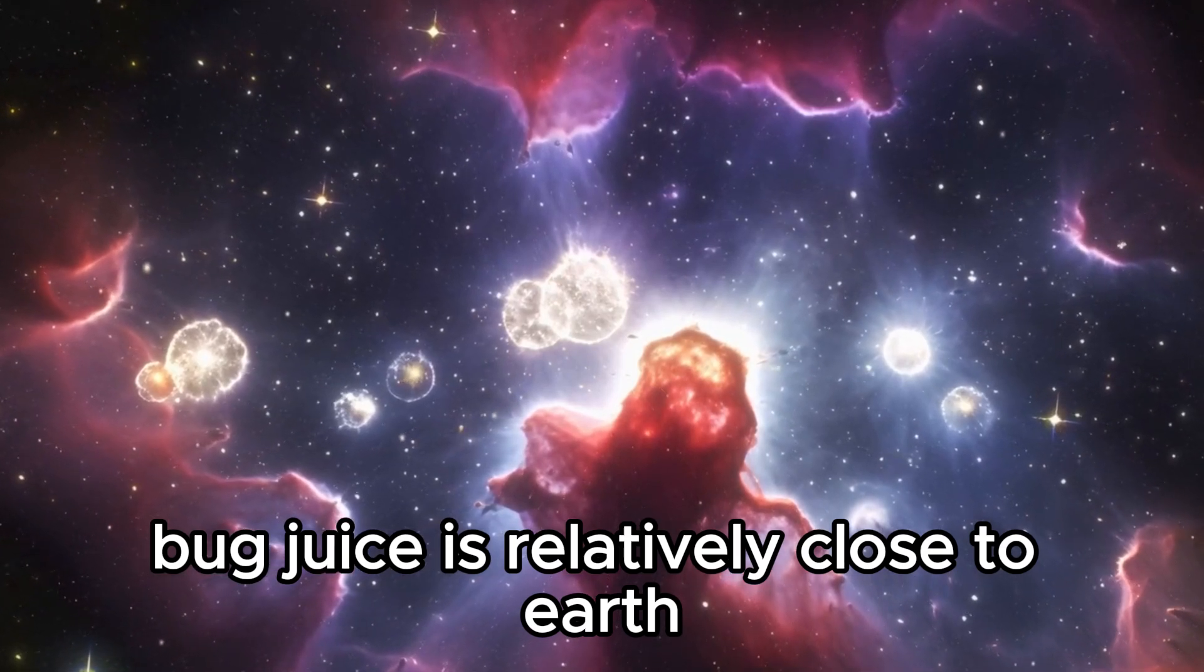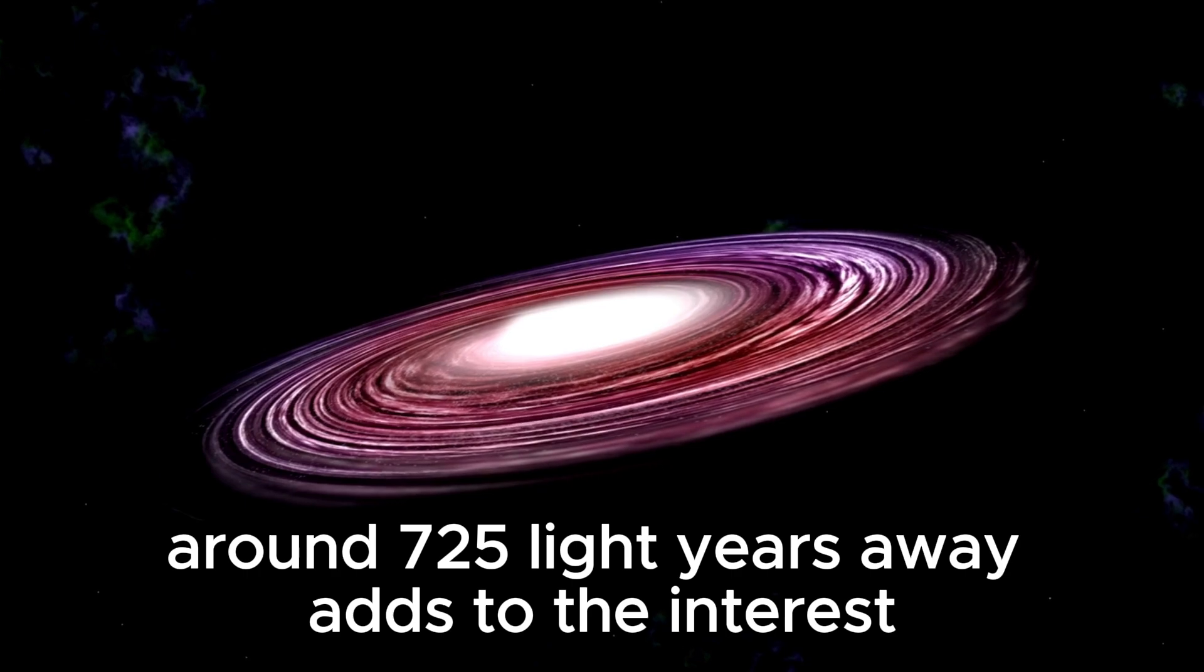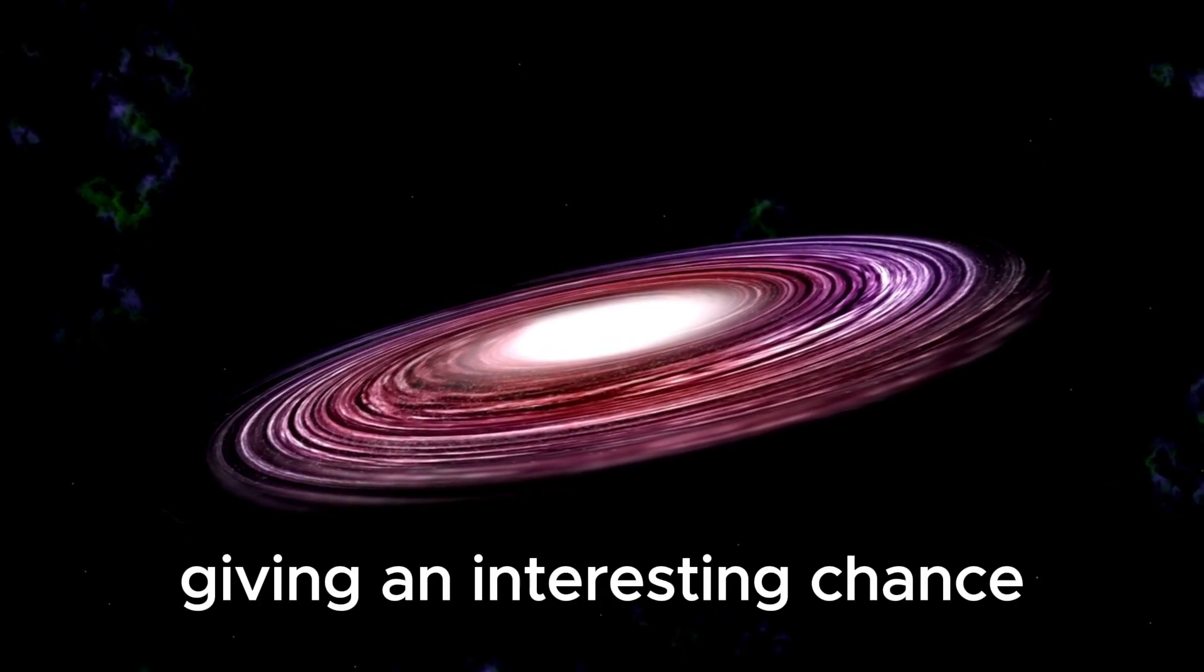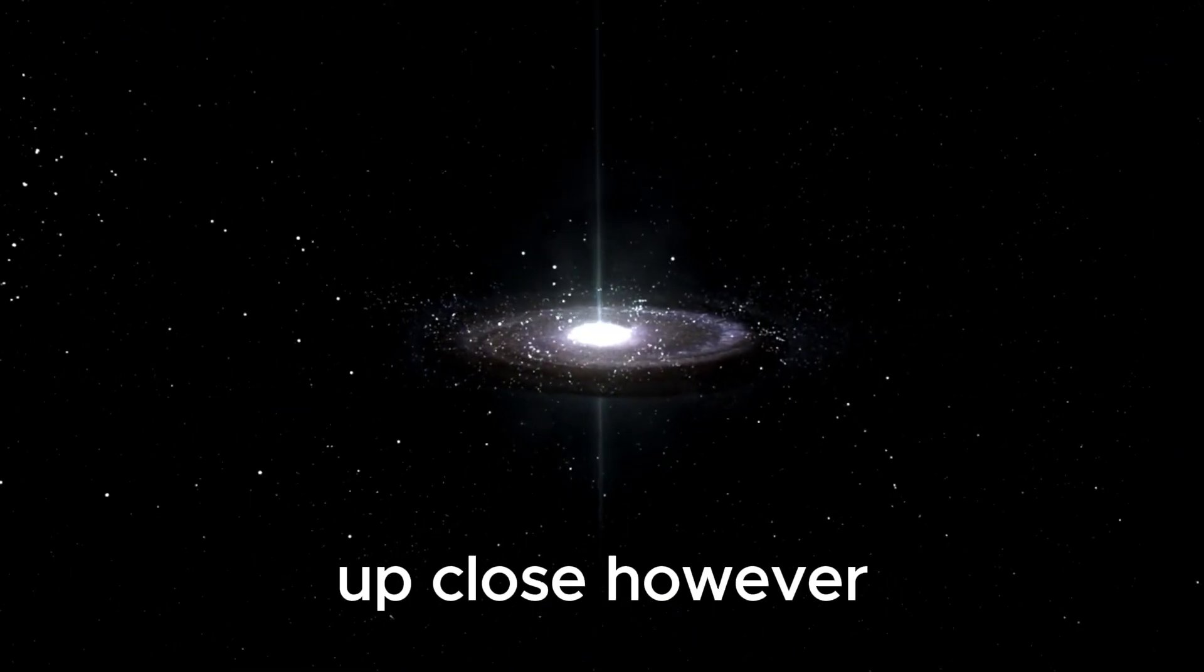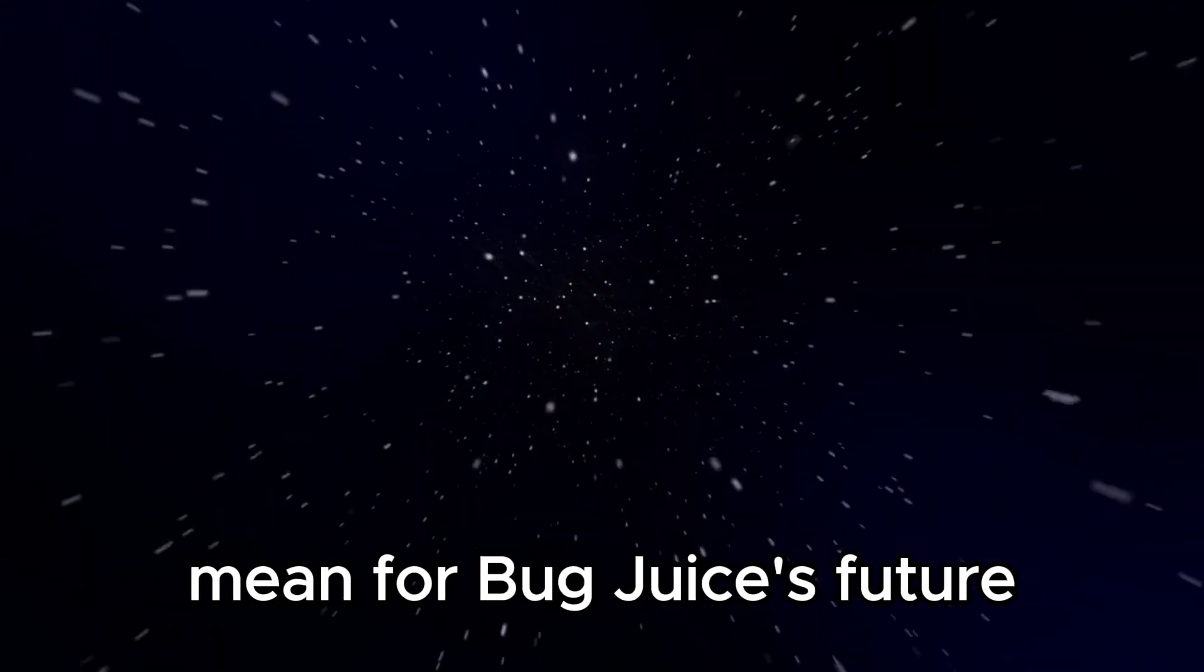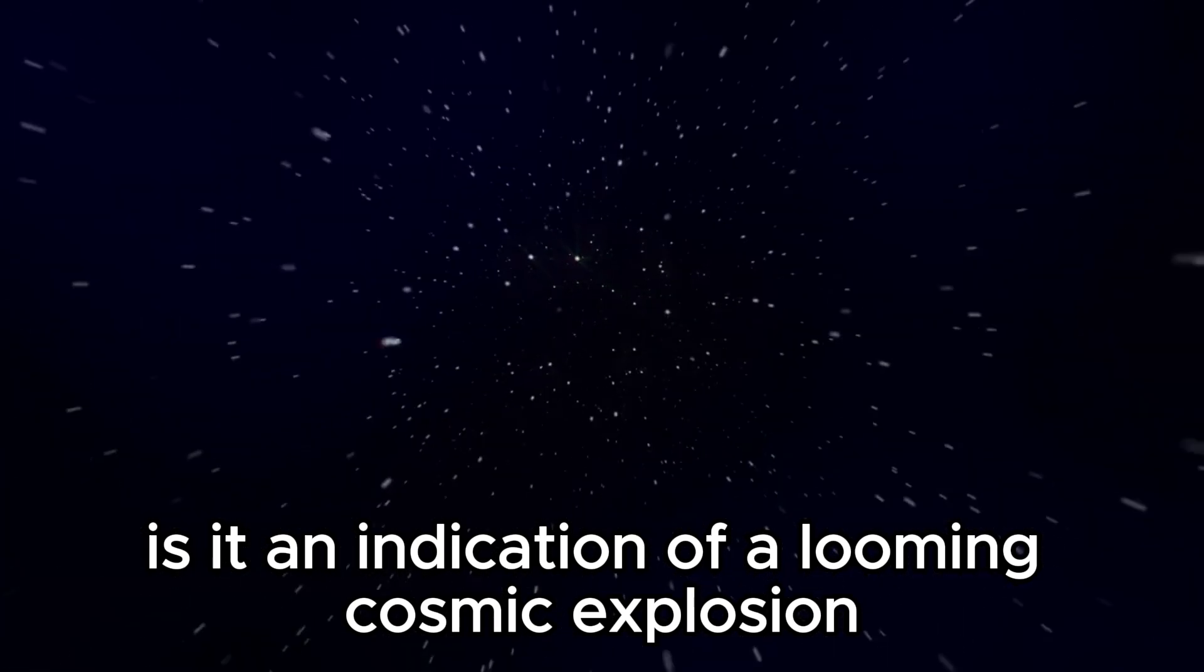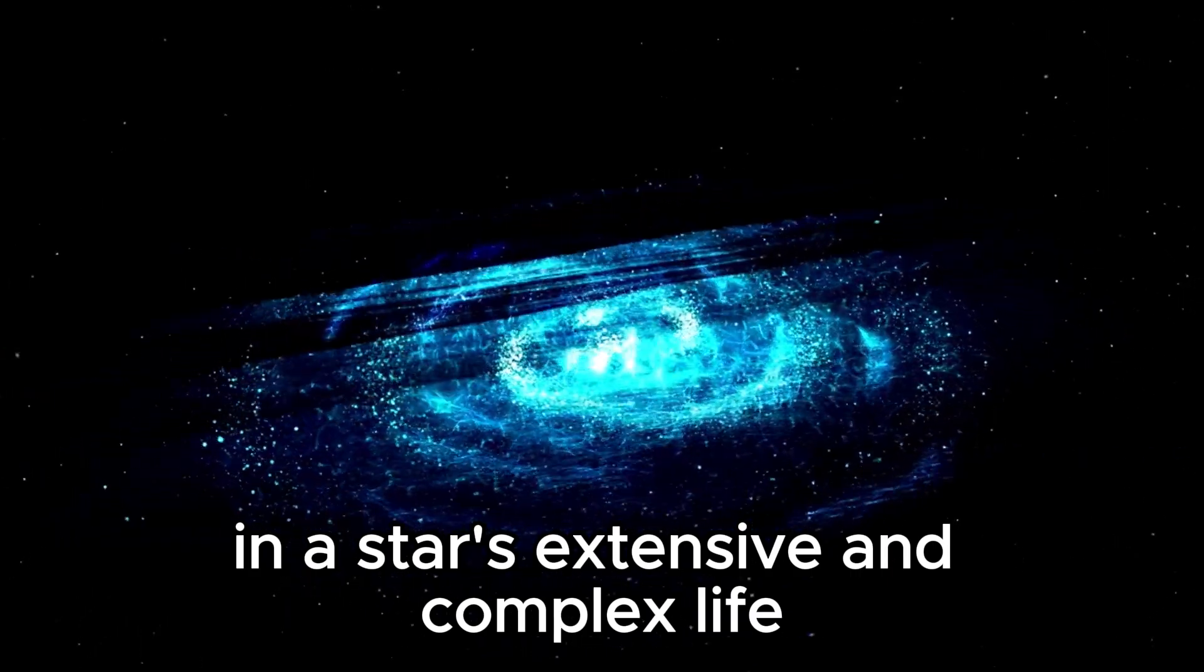Betelgeuse's relatively close proximity to Earth, around 725 light-years away, adds to the interest as any such blast would be visible from our planet, providing an exciting opportunity to observe a supernova up close. However, the question remains. What does this dimming event mean for Betelgeuse's future? Is it a sign of a looming supernova, or simply a unique episode in a star's extensive and complex life?